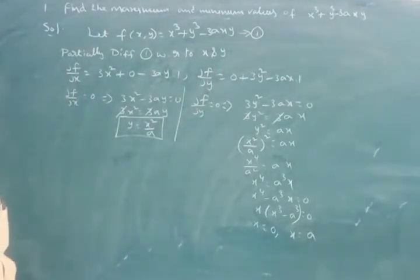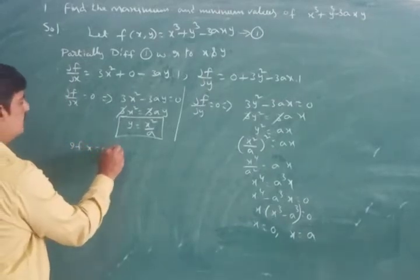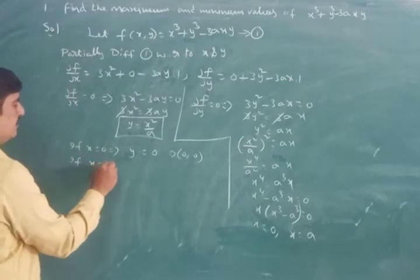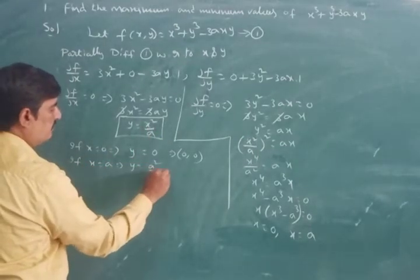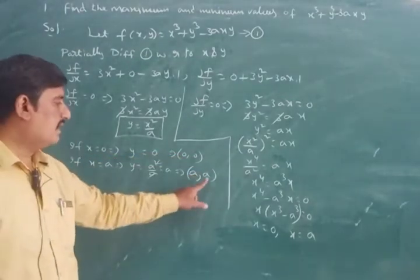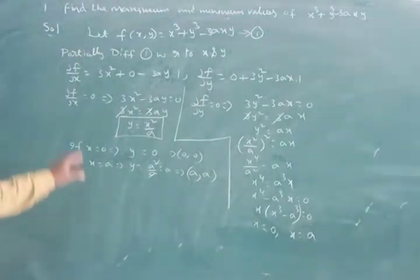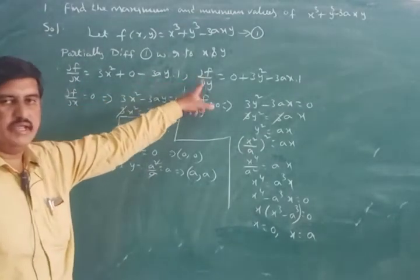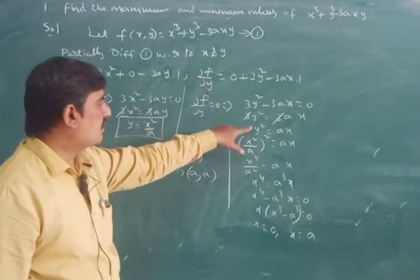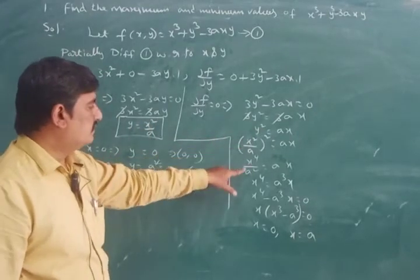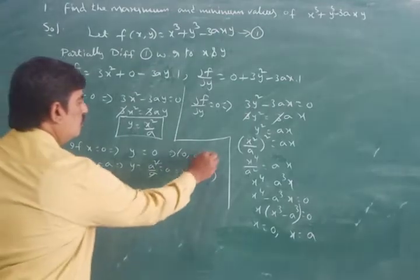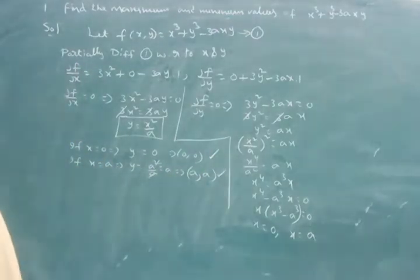Factoring out x: x(x³ − a³) = 0, giving x = 0 or x = a. If x = 0, then y = 0²/a = 0, giving the point (0, 0). If x = a, then y = a²/a = a, giving the point (a, a). So we have two critical points: (0, 0) and (a, a).